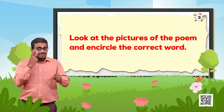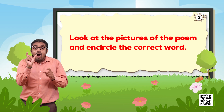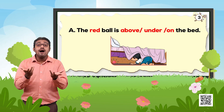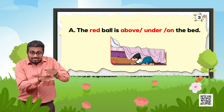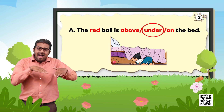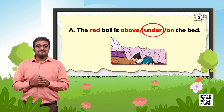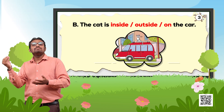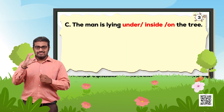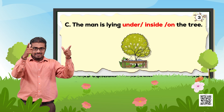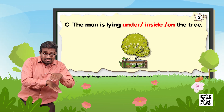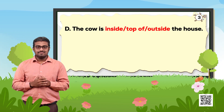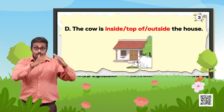Look at the pictures of the poem and encircle the correct word. Under has been circled here as an example. The cat is inside, outside, or on the car. The man is lying under, inside, or on the tree. The cow is inside, top of, or outside the house.